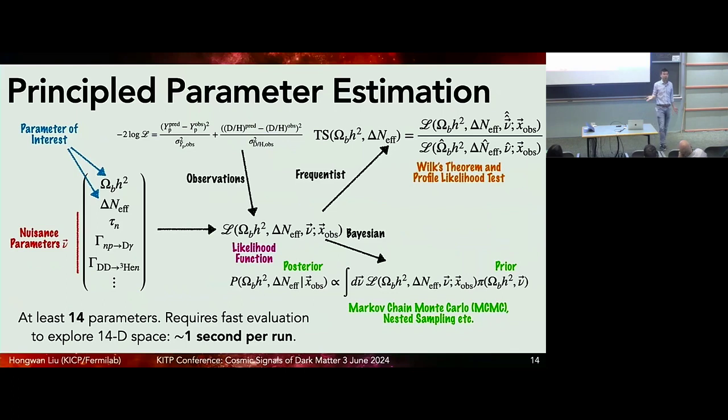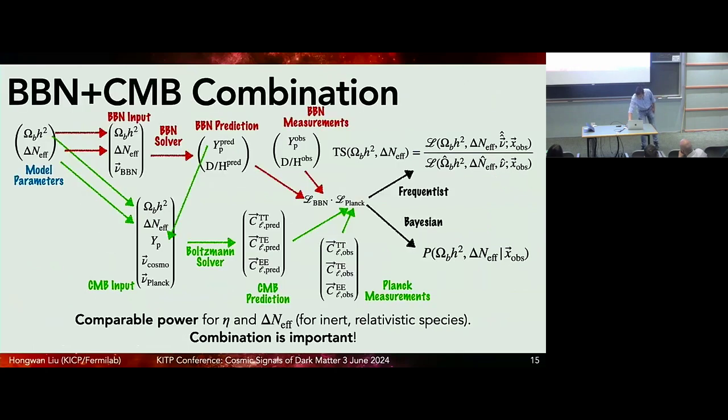For example, you need to include the fact that you don't really know the neutron decay lifetime very well. It's at least 14 parameters, depending on what you want to do. The minimum thing that you need is 14 parameters, so you need to explore some 14-dimensional space. Typically, in order to do this efficiently, you need to be able to evaluate your likelihood, in other words, solve those differential equations that I talked about, at about one second per choice of these parameters.